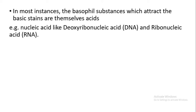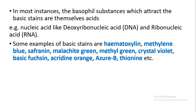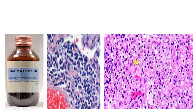DNA and RNA can be easily stained by using basic stains. Some examples of basic stains include: hematoxylin, methylene blue, safranin, malachite green, methyl green, crystal violet, basic fuchsin, acridine orange, azure B, and toluidine. All of these are examples of basic stains.